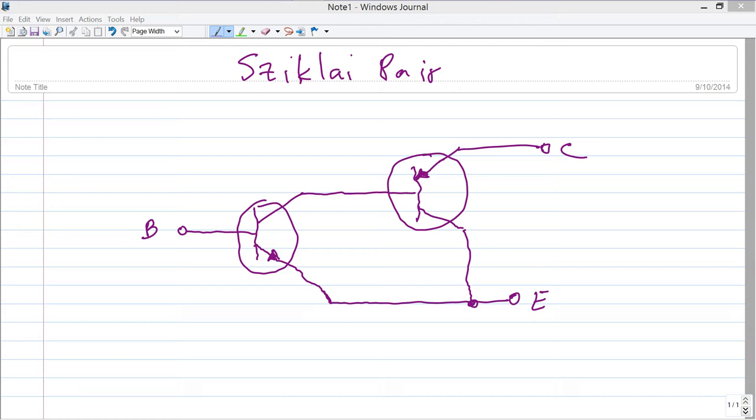Note the similarities and note the differences. We take an NPN bipolar transistor and cascade it with another transistor, but this second transistor is a PNP device.